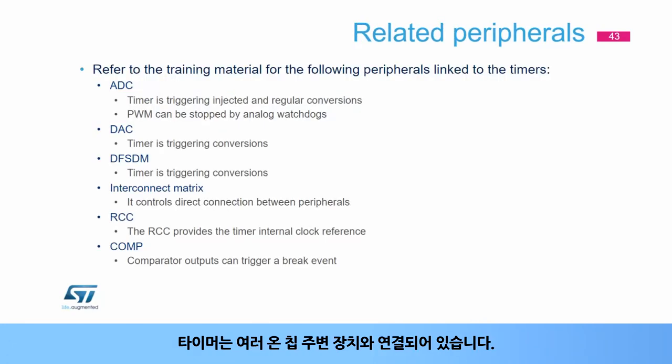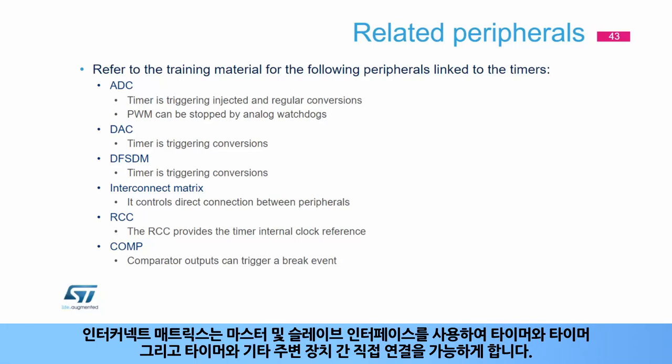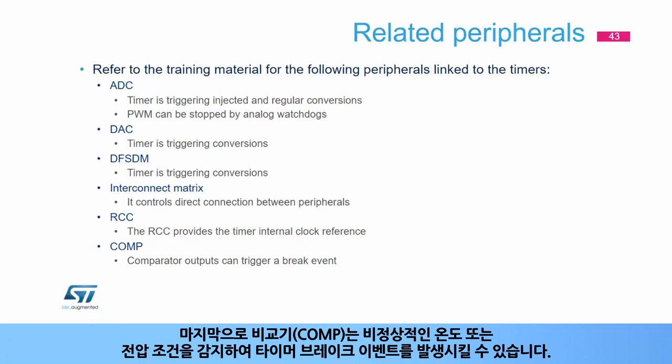The timer is linked with multiple on-chip peripherals: it serves as a trigger source for the ADC, DF-SDM, and DAC modules. The interconnect matrix enables timer-to-timer direct connection using the master and slave interfaces, and also direct connection between timers and other peripherals. The reset and clock control unit (RCC) provides the internal clock reference for all timers. The comparator units can detect abnormal temperature or voltage conditions and cause a timer break event.